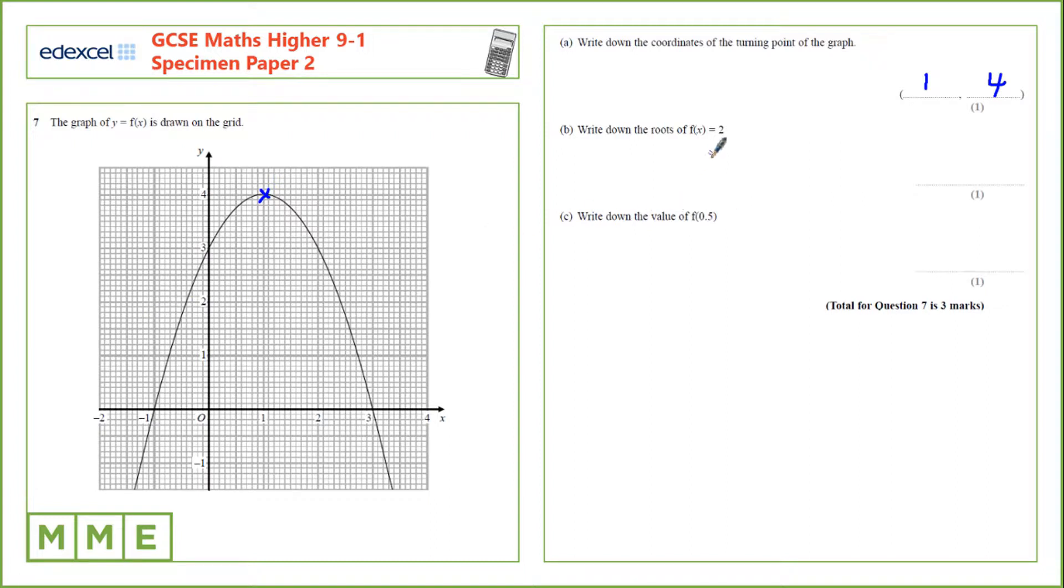For f of x equals 2, we're essentially saying y equals 2. We need to put in the line y equals 2 and set that equal to f of x. So the intersection of the line y equals 2 and f of x are these points here, which look to be minus 0.4 and also 2.4.